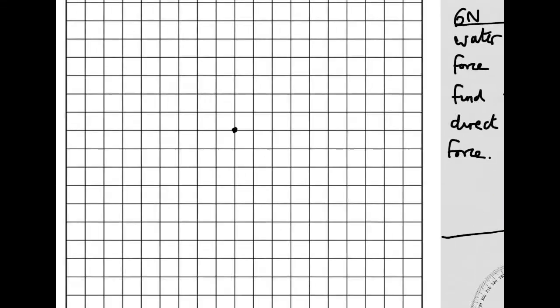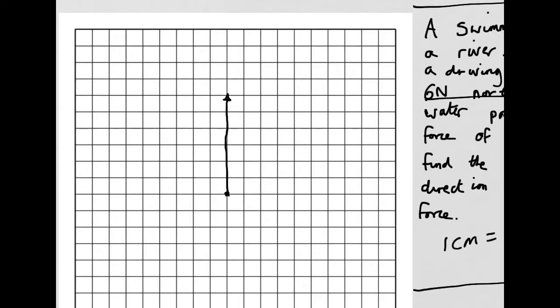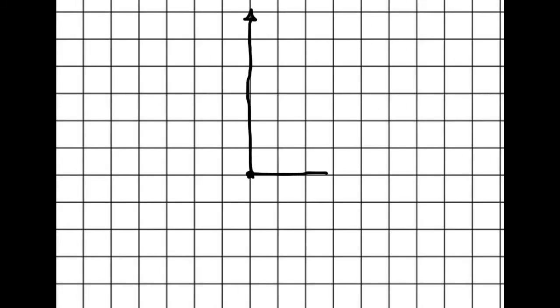These are one centimetre squares, so six newtons north — each square is one centimetre. So I count one, two, three, four, five, six — there's the six newton north arrow. And three newtons east — one, two, three. There's my free body diagram, showing the two forces acting on the swimmer.